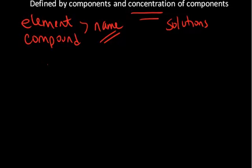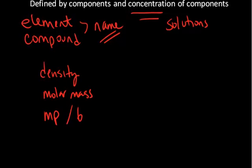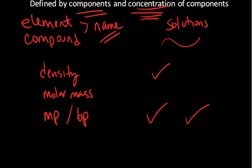For example, for an element or compound it will have a list of distinguishing characteristics such as its density, its molar mass, its melting point and boiling point. All of these properties are consistent for an element or compound. But for solutions the density will vary. The molar mass is meaningless. Rather we talk about the molar concentration of solutions. The melting point and boiling points will vary for solutions. So the properties of solutions vary based on the components and the concentrations of those components.